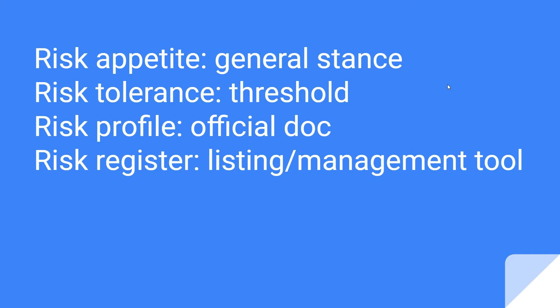Then you have your risk register, which is essentially a listing that lists out the risks. It includes the severity of the risk, the description of the risk, discussion or mitigation plan, the dollar amounts of the cost of mitigation, the mitigation date, the mitigation status, and so on and so forth.